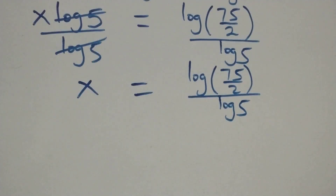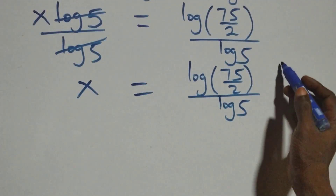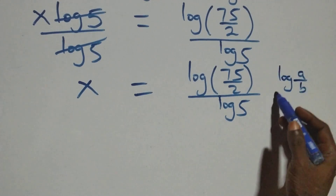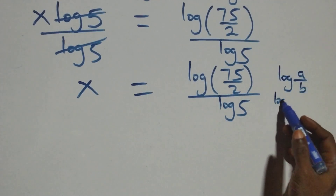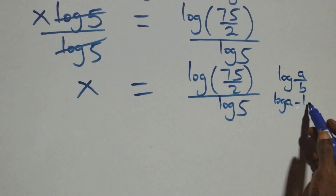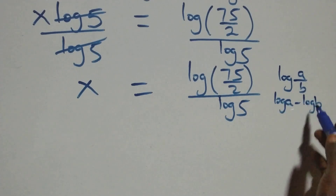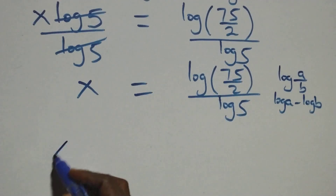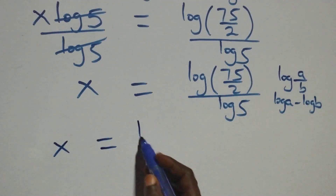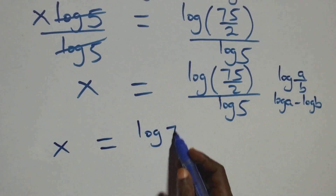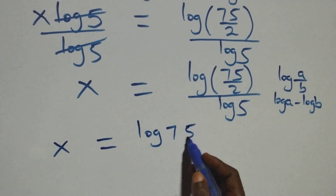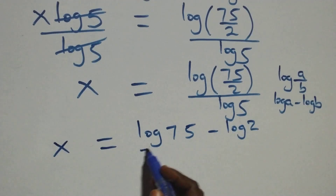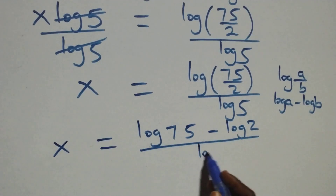From what we have here, this follows the log quotient rule: when we have log(a over b), this is the same thing as log a minus log b. So we can write x equals (log 75 minus log 2) over log 5.